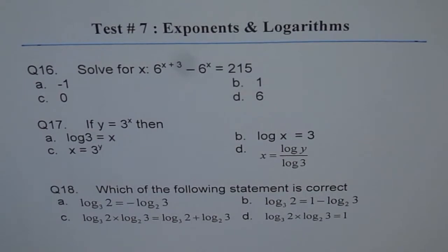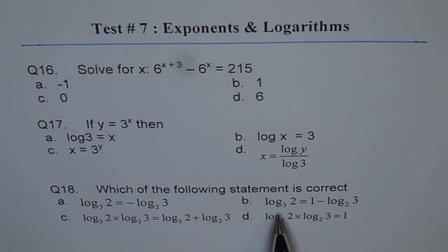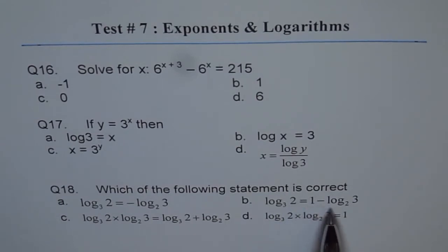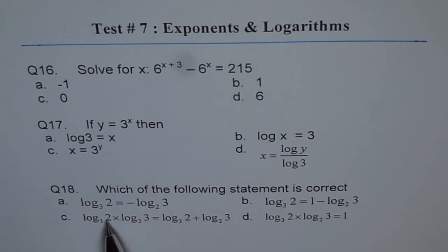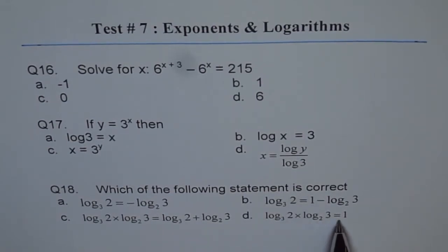Question 18: Which of the following statements is correct? Log base 3 of 2 equals negative log base 2 of 3; or log base 3 of 2 equals 1 minus log base 2 of 3; or log base 3 of 2 times log base 2 of 3 equals log base 3 of 2 plus log base 2 of 3; or log base 3 of 2 times log base 2 of 3 equals 1.